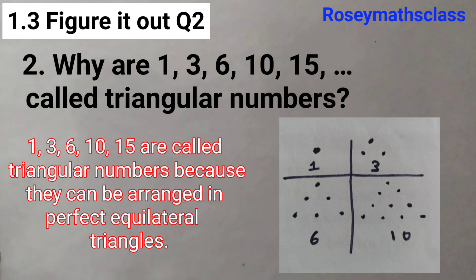Equilateral triangles means they have all equal sides. As you can see here in the picture, all the sides have equal number of dots. So that's why they are called triangular numbers.